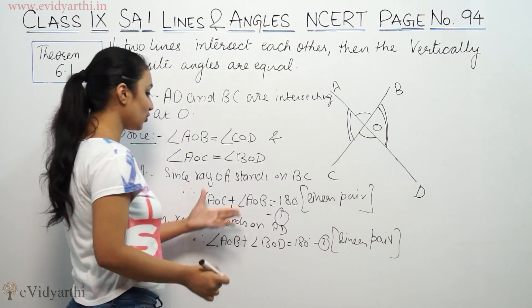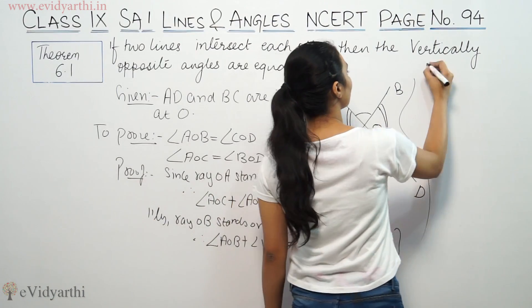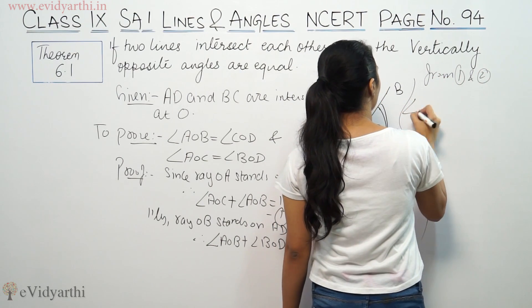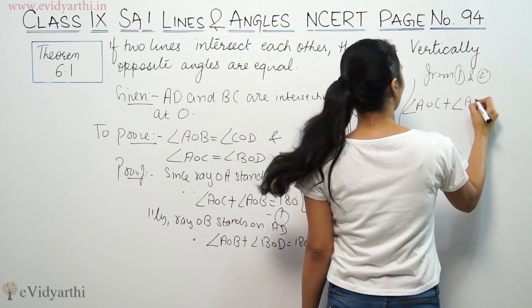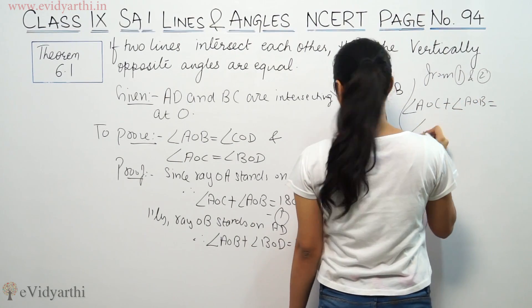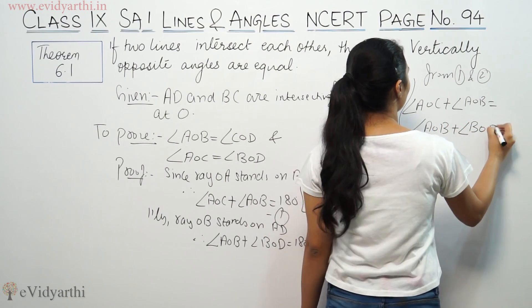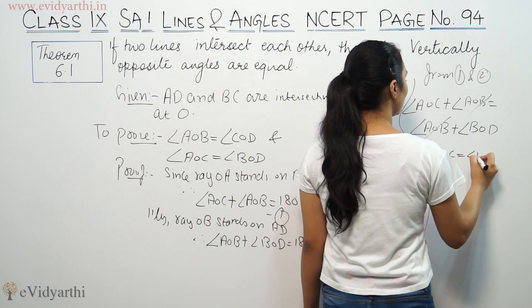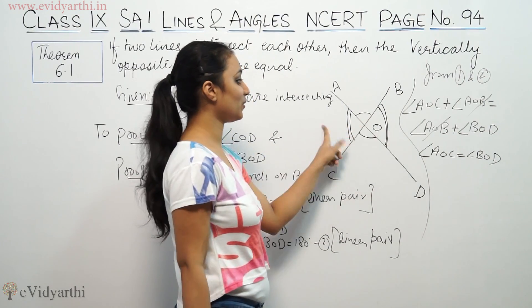From the two equations, from first and second, angle AOC plus angle AOB is equal to angle AOB plus angle BOD. So you are going to cancel away. So you are going to pass on AOC is equal to BOD. This AOC is equal to BOD.